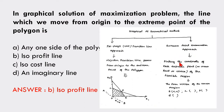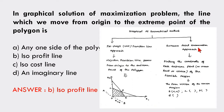In the second approach — the extreme point enumeration approach — we find the coordinates of each extreme point of the feasible region, such as points C, D, E. From those corner points, we find the optimum solution.